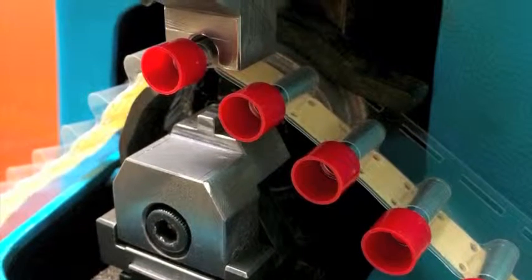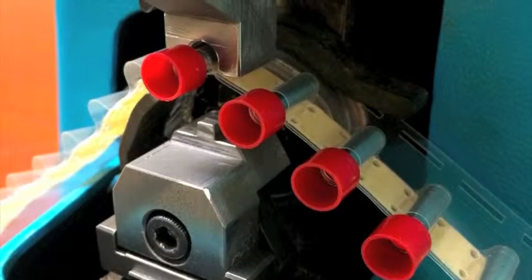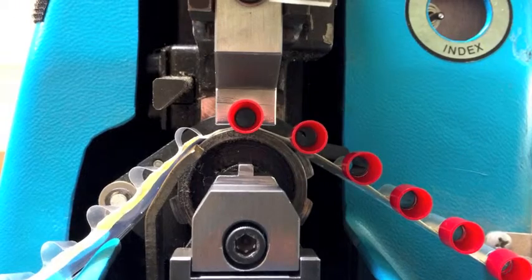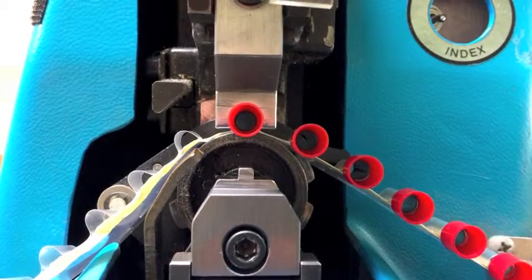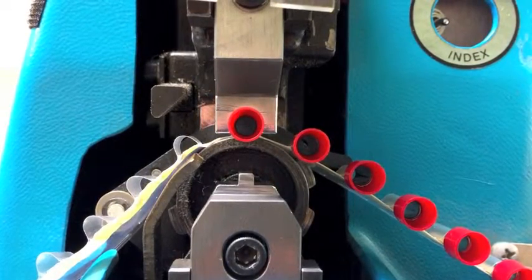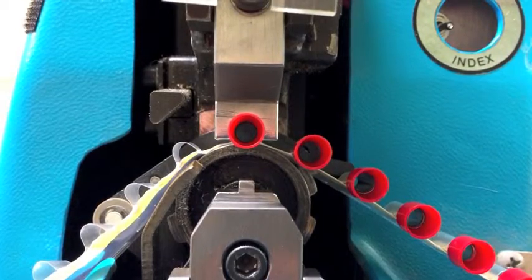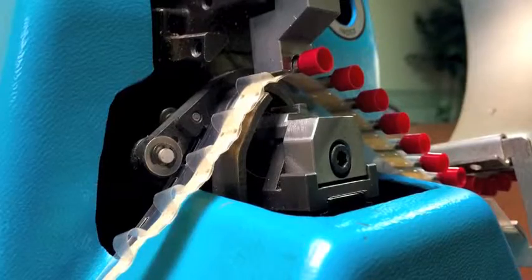Other mounted ferrule crimpers use a dedicated machine that only crimps insulated ferrules that are attached to one another by the molded insulator. Our system uses the H270 crimping machine, which can be used for any type of tape-mounted product: insulated or uninsulated ferrules, ring terminals, disconnects, spades, or even butt connectors.